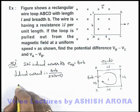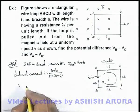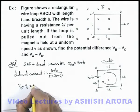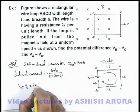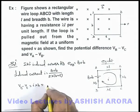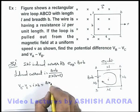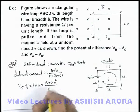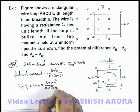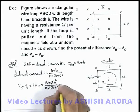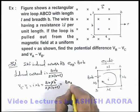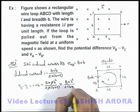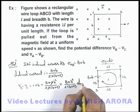The potential difference across terminals B and C: V_B minus V_C equals iR, which is i times λb. This can be written as Bvλb² divided by 2λ(b + l). Lambda cancels out, giving Bvb² divided by 2(b + l). That is one answer.